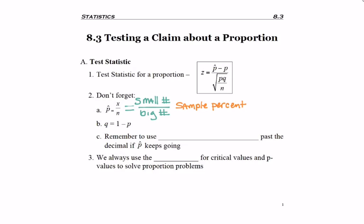The other piece of the formula that won't necessarily be given to you is Q, and the formula for Q is 1 minus P.